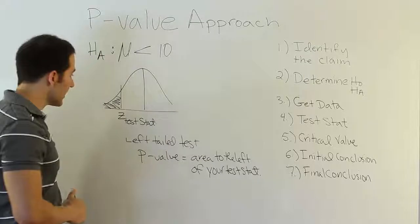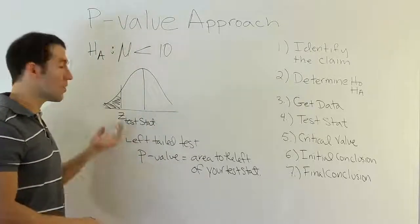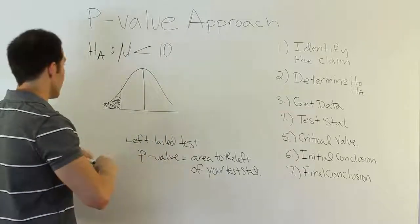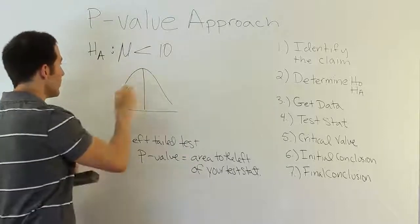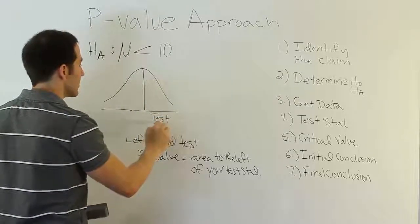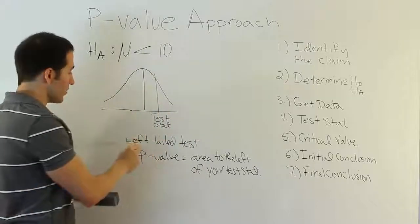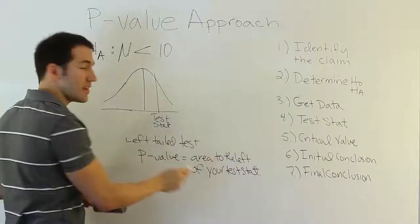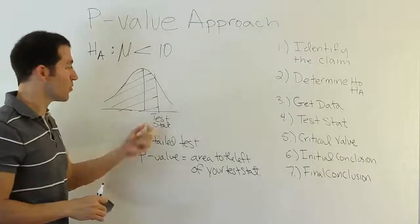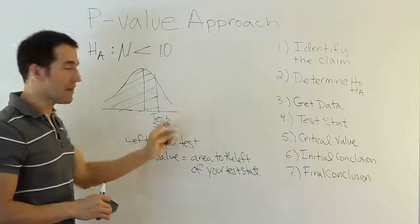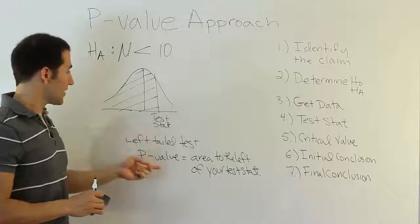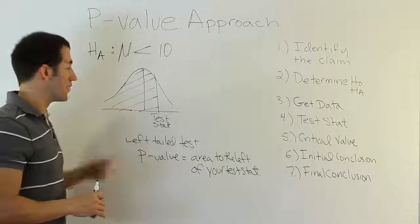One caution: just because it's a left-tailed test doesn't mean the test stat is always on the left-hand side. Sometimes the test stat ends up on the right-hand side of the curve. If that happens, you still follow the rule — find the area to the left of the test stat, which would be most of the curve. Students sometimes find only the tail area out of habit, but you must follow the rule: for a left-tailed test, always find the area to the left of the test stat.